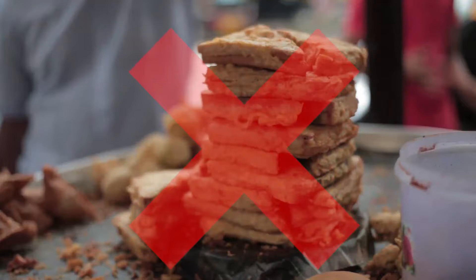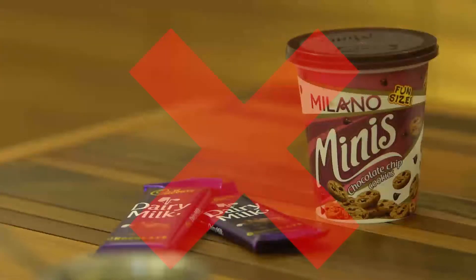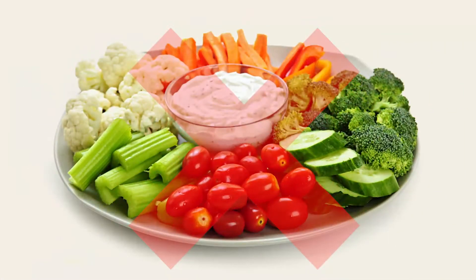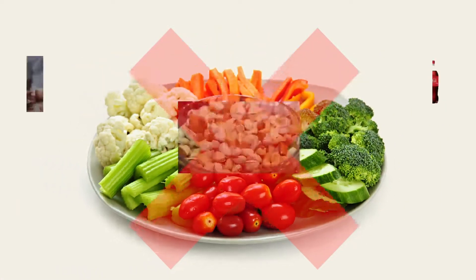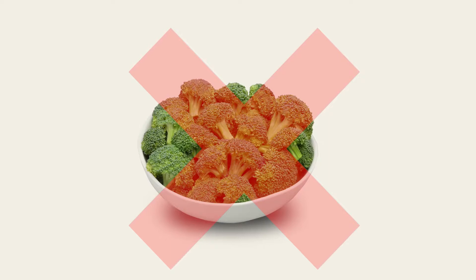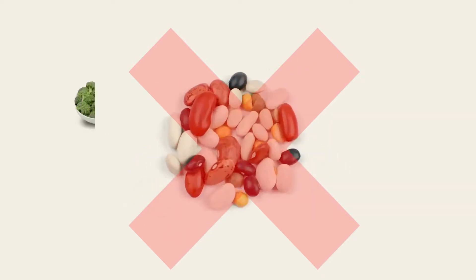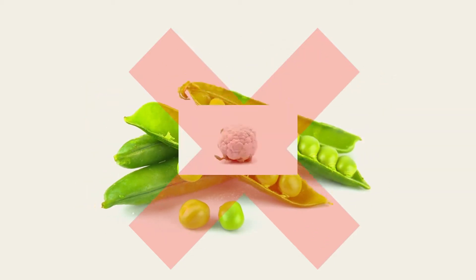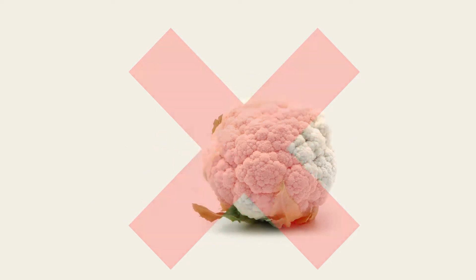Avoid fried, greasy, or spicy foods; sugar-rich foods like sweets and chocolates; caffeine, which is present in tea, coffee, and some beverages like Coca-Cola; milk and milk-based products such as mitai; and raw and unpeeled fruits and vegetables. Also avoid nuts, and high-fiber foods like broccoli, corn, dried beans, cabbage, peas, and cauliflower, which can cause diarrhoea and cramping.